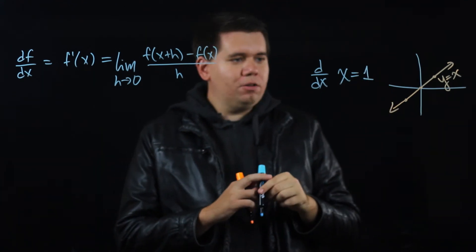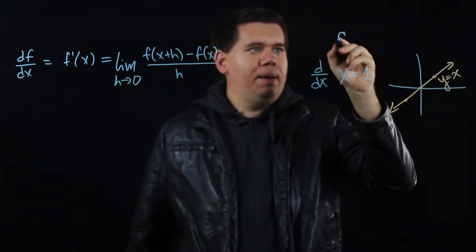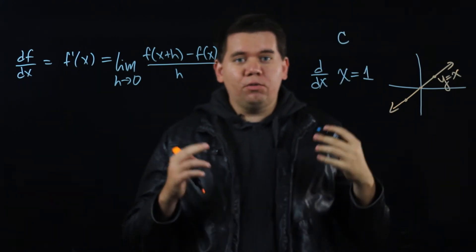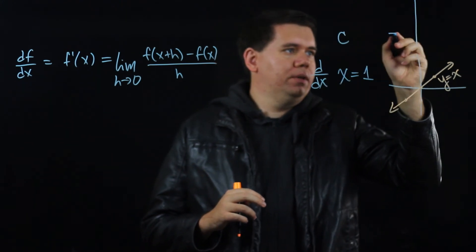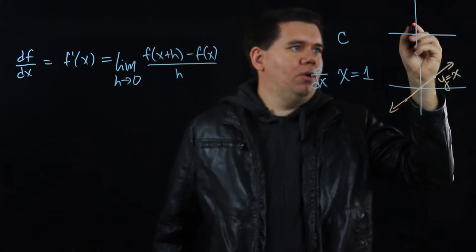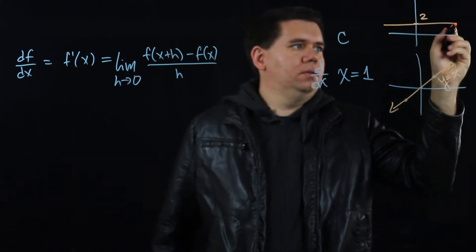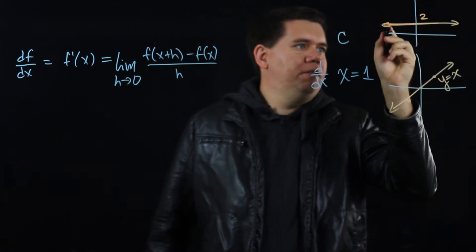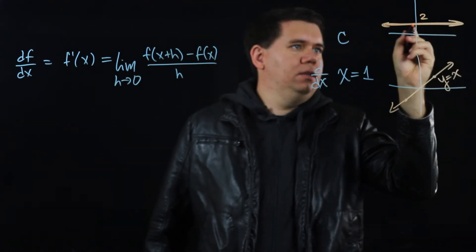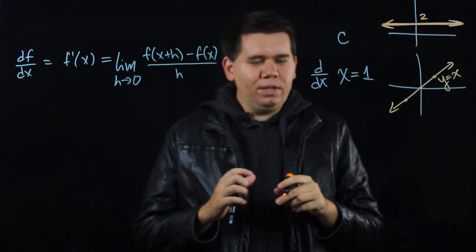Or if instead you have a constant function, maybe a function like the function that's always equal to 2, for example. So here's a function that's always equal to 2. It should be a flat horizontal line equal to 2.